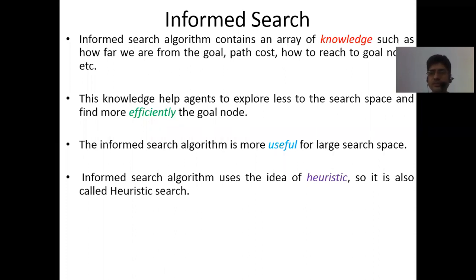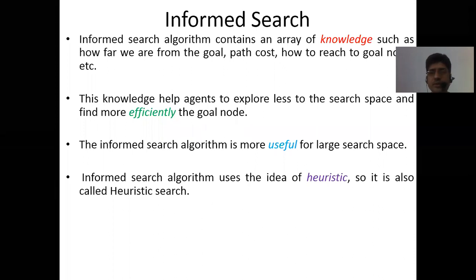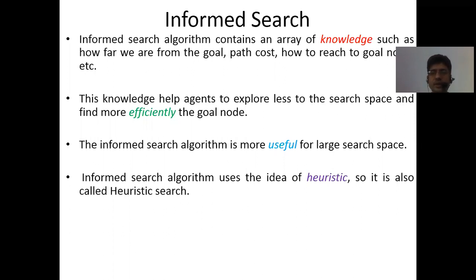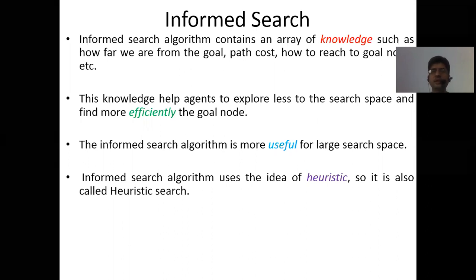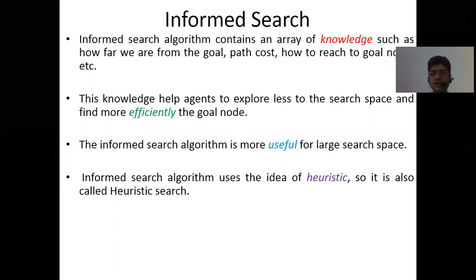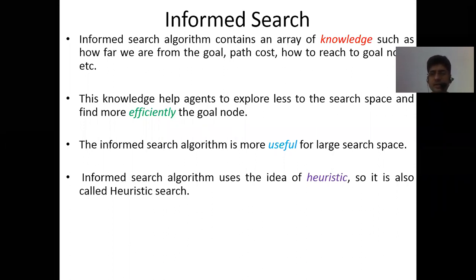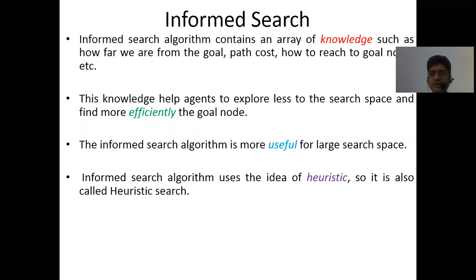What is the meaning of 'heuristic'? Students are asked to share their understanding. Atul says it is a kind of self-learning approach, which is correct. Shrikanth calls it a hit-and-trial method, and Tushar says it is a method where one tries various approaches to reach a specific goal — both answers are along similar lines.